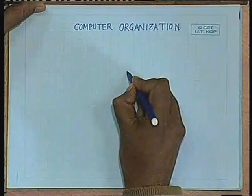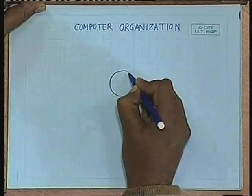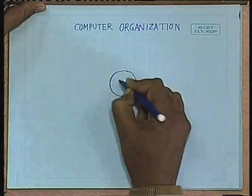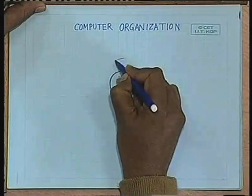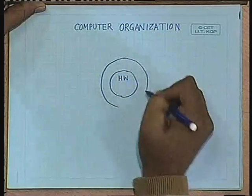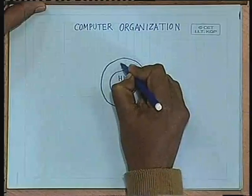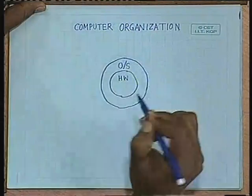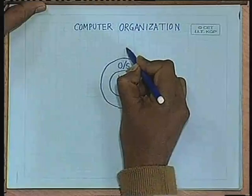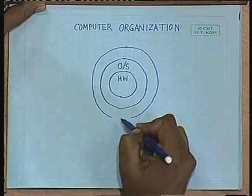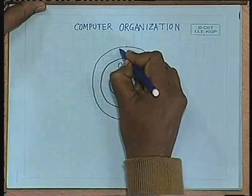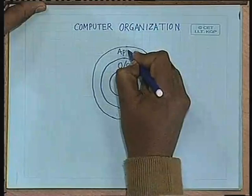To get a high level view, at the heart of the computer we have the hardware resources of the computer. So at the centre of the computer we have the hardware. On top of hardware we have a layer of software which is called operating system or OS, and above this operating system we have another layer of software which are basically the application softwares.